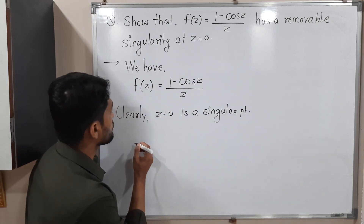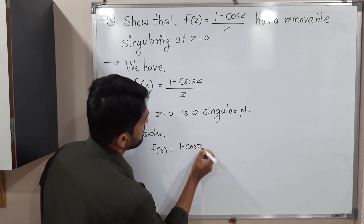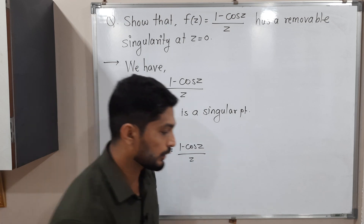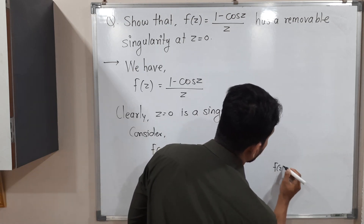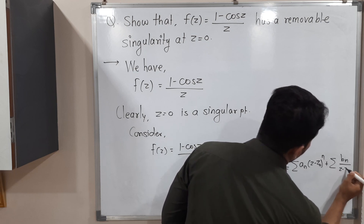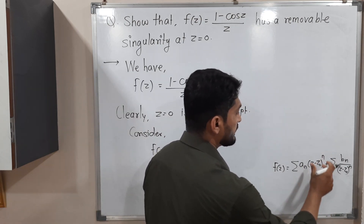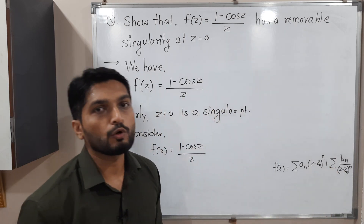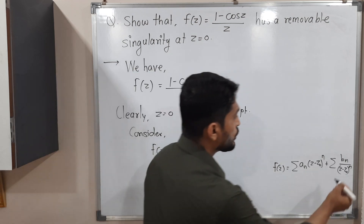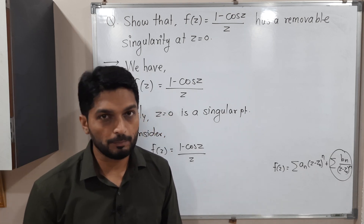Consider f(z) = (1 - cos z) / z. We have already discussed Laurent series in previous videos, but let us recall. The standard form is: summation a_n (z - z₀)^n plus summation b_n / (z - z₀)^n. The first part is the analytic part and the second is the principal part. If there is no term in the principal part, we declare it a removable singularity.